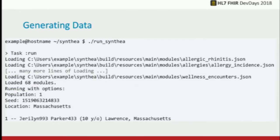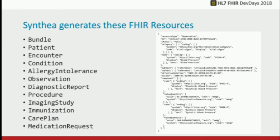One thing you can't do on the command line — and I get this question all the time — is specify 'only generate me a population of people who have lung cancer.' Can't do that right now. What happens is it loads all the modules and starts producing people, giving you a list with their name, age, and where they're living.